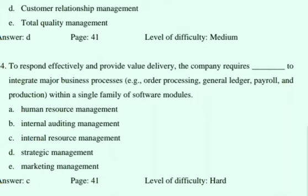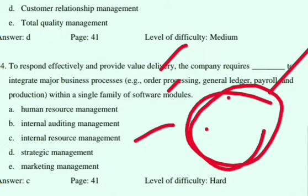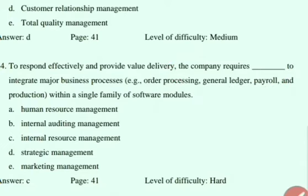To respond effectively and provide value delivery, the company requires dash to integrate major business processes — things like order-to-order, ledger, payroll, and production. When you are doing all this work, the company needs something that can integrate all these things. So the answer is Internal Resource Management — option C is the correct answer.